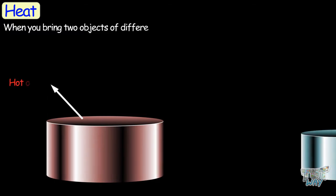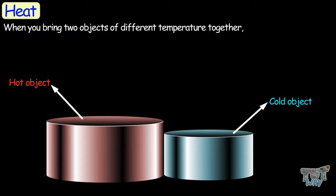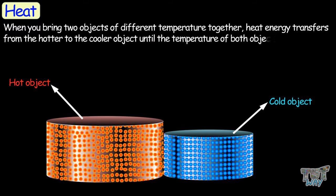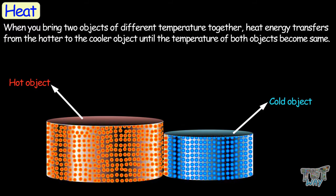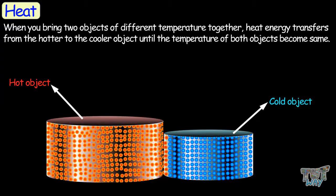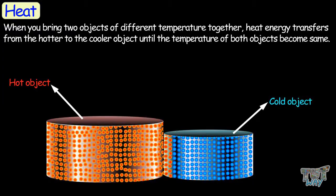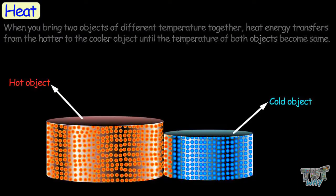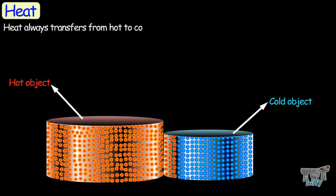When you bring two objects of different temperatures together, heat energy transfers from the hotter to the cooler object until the temperature of both objects becomes the same. Heat always transfers from hot to cold.